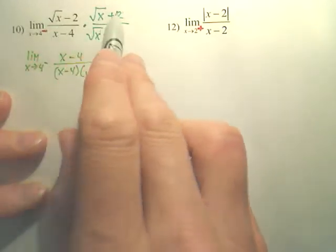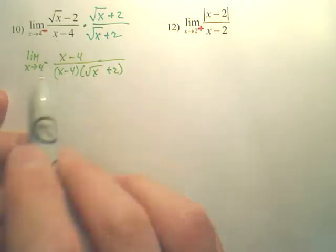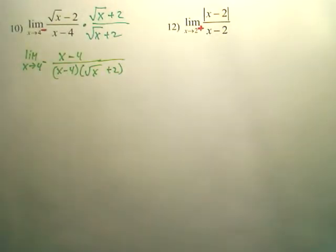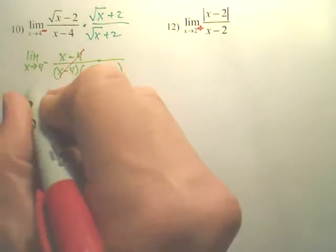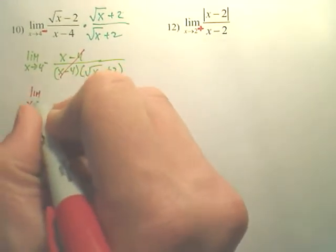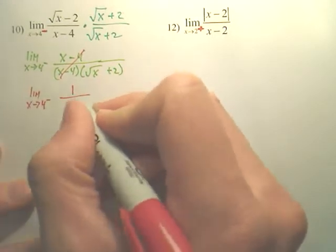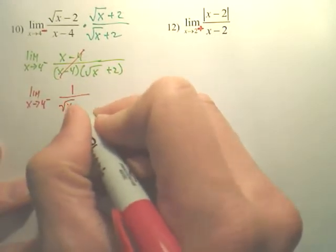So the top, when you FOIL out, gives you this. The bottom keeps. And you notice a removable discontinuity, because you can cancel that. So you now have the limit as x approaches 4 from the negative side of 1 over the square root of x plus 2.